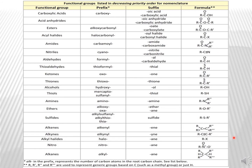Before going to the second step, I am showing here the functional group priority table. It is very important that we know this priority table, because on the basis of this priority table we can understand the second step, where we have to identify the highest priority group.